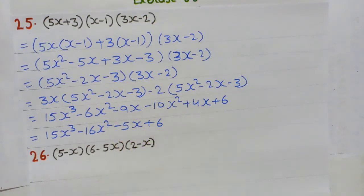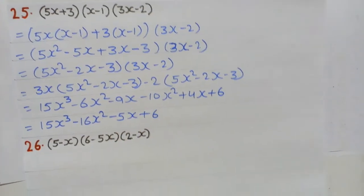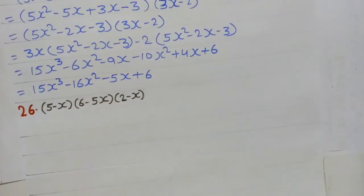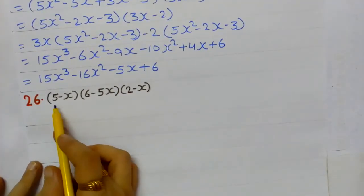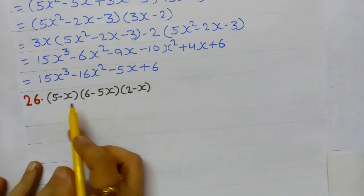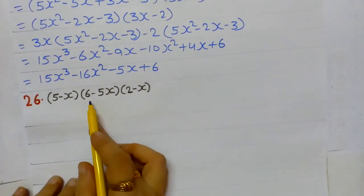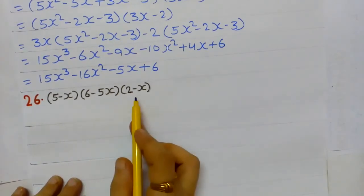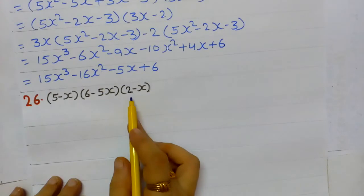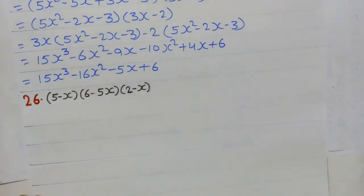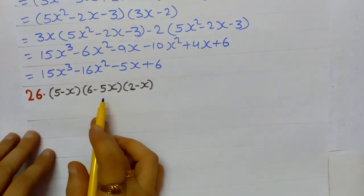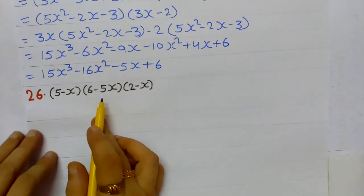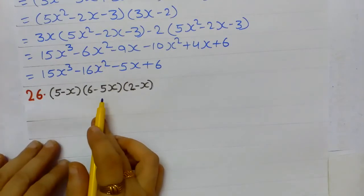Now let's look at the next question — it is similar to this one. Question: (5 - x)(6 - 5x)(2 - x).